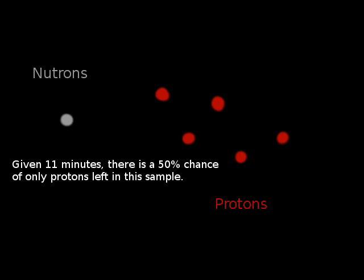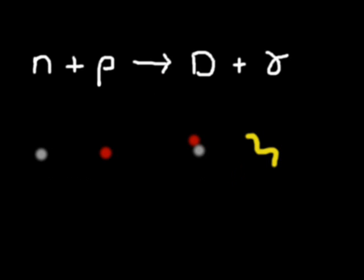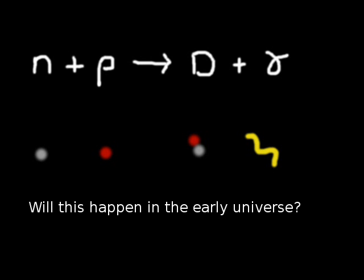But like I said, neutrons still decay when free. If they don't form atoms soon, all of them will disappear. Recall the reaction. A neutron plus a proton goes into a deuterium plus a photon, where the photon is the binding energy. So can we expect the deuterium to form? Yes. But can we expect it to survive the very hot early universe? No.